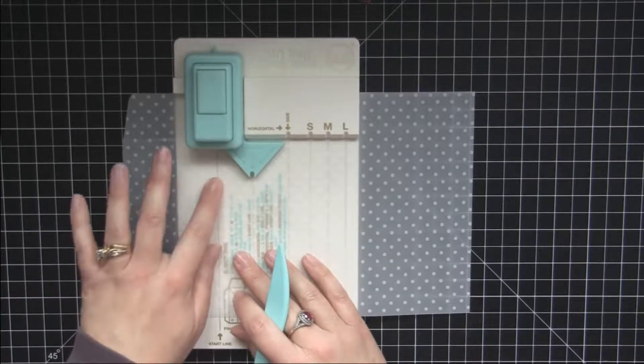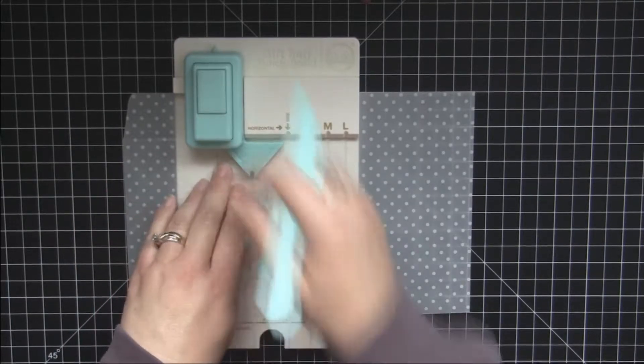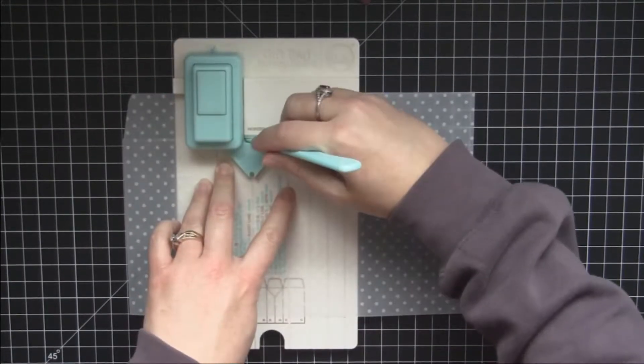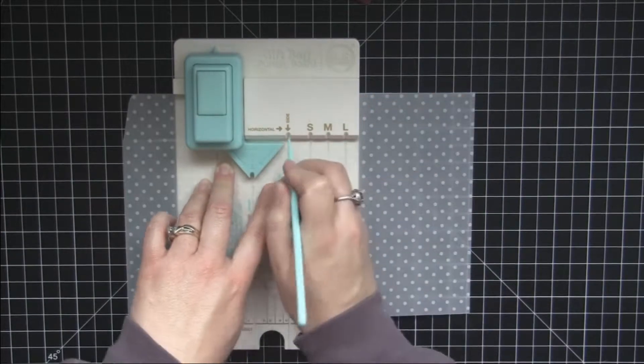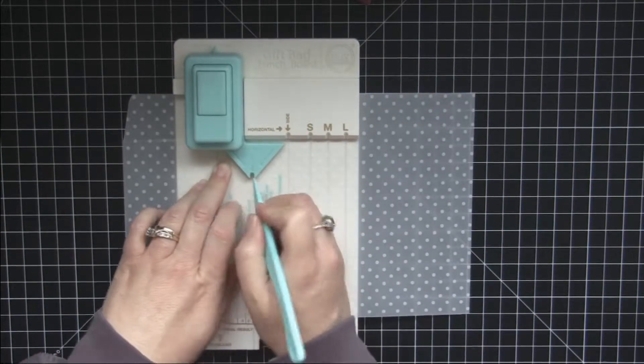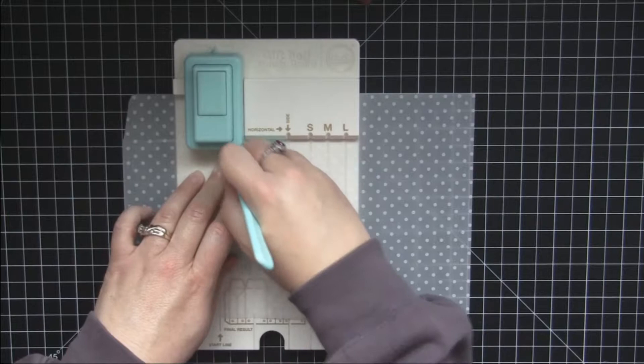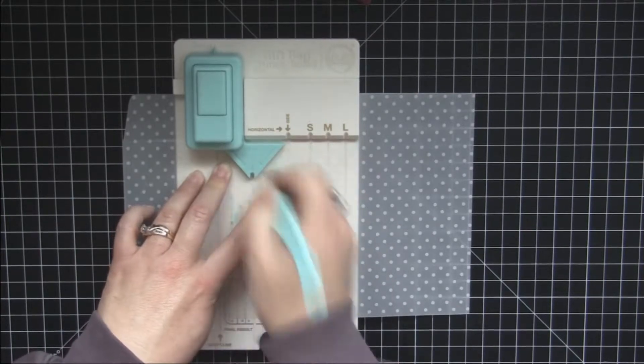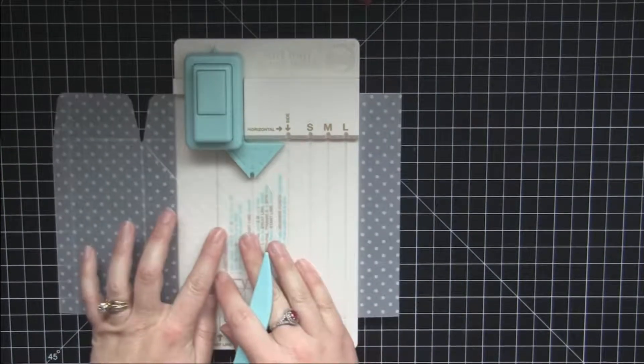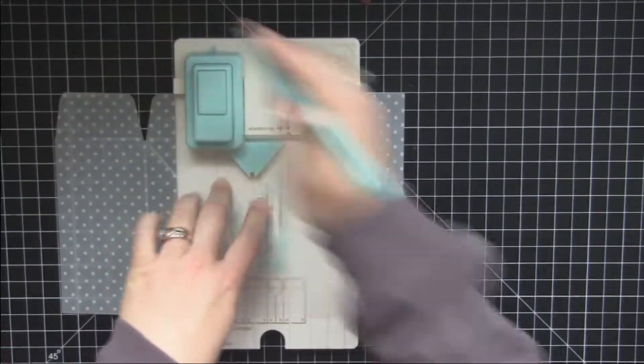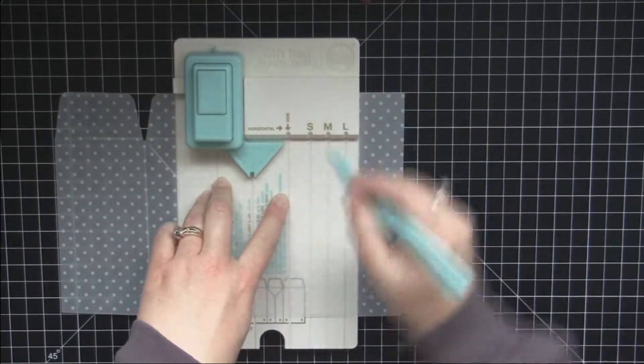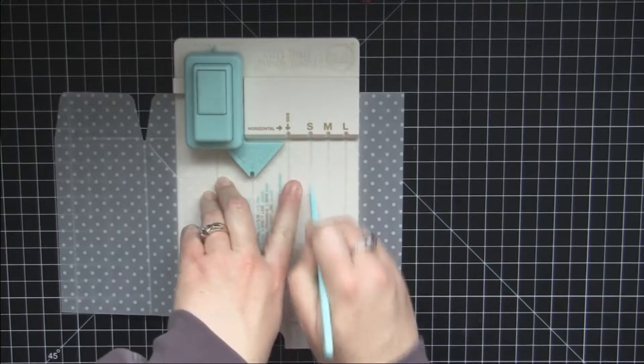Then you move your score line to this start and punch again and now we're scoring the side of the bag. So I score along all the side indicators. Move this line to the side, the start line, and then we're going to score the small again.